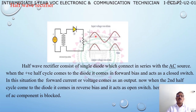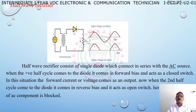The input waveform to the diode will have a positive half cycle and a negative half cycle. In the diode symbol, the arrow mark is the positive terminal and the bar is the negative terminal. During the positive half cycle, the positive terminal is connected to the positive — this is forward bias. When the diode is in forward bias, it acts as a closed switch and the positive half cycle passes through to the load.